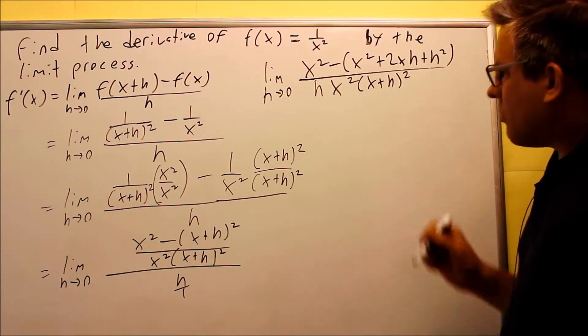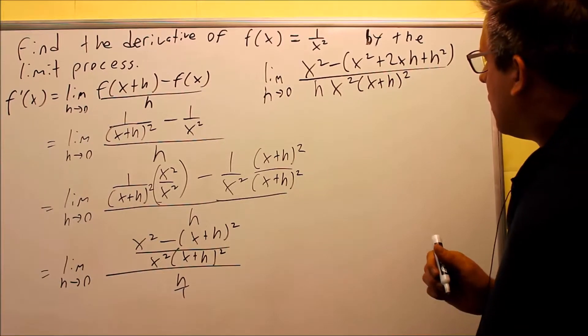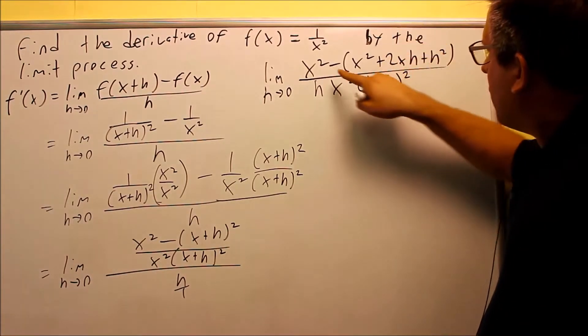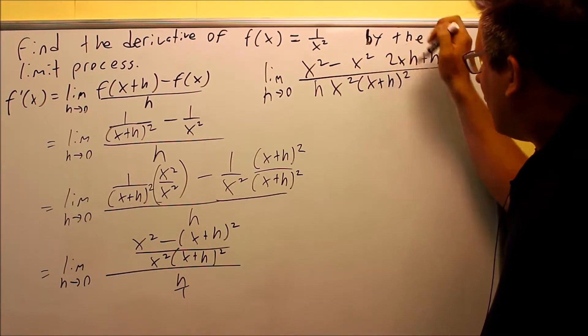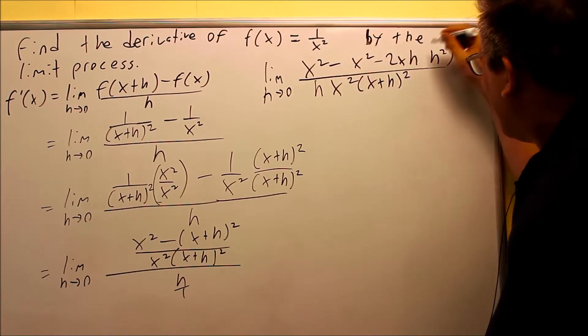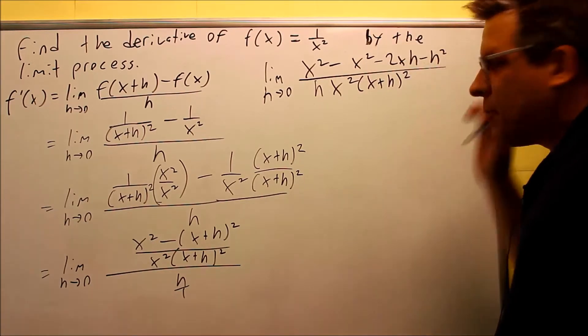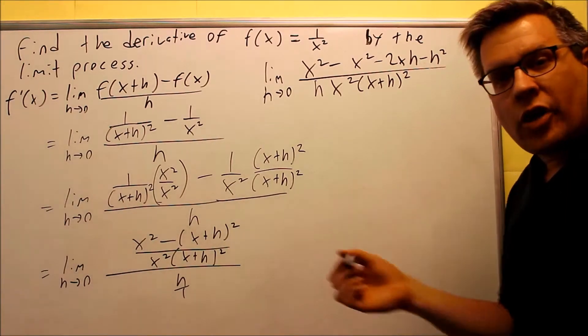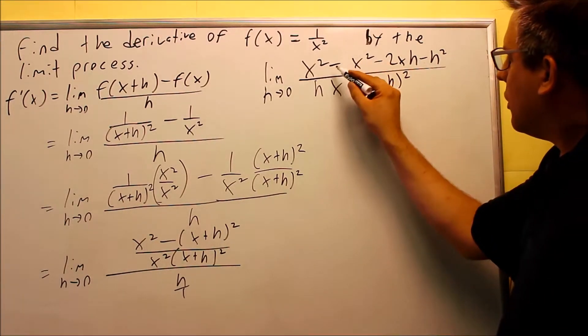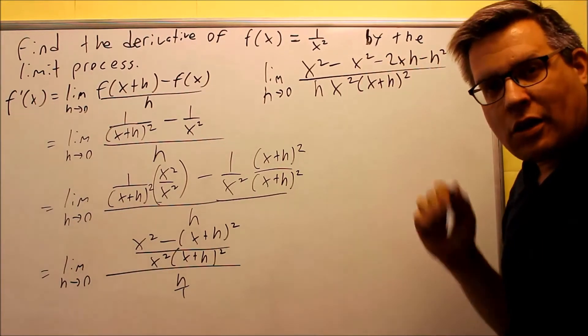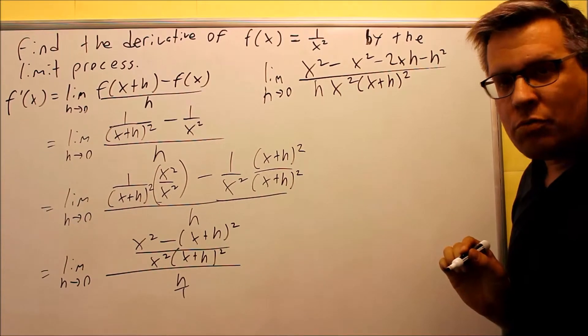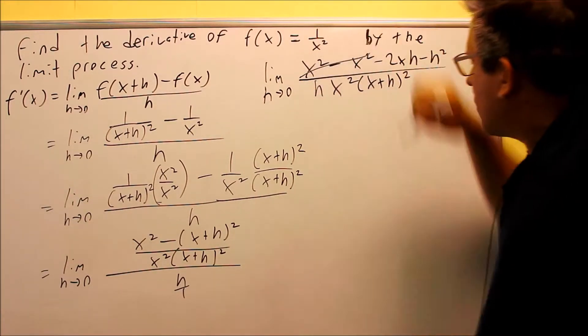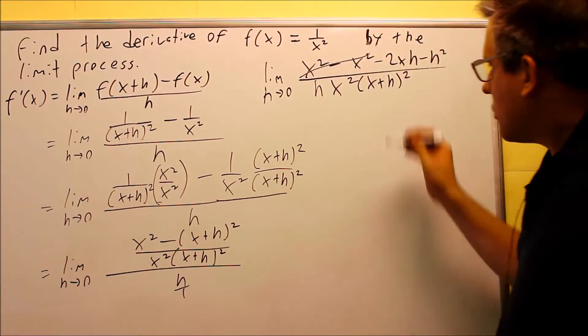And then I need to do some simplifying. So what I'm going to do here is I'm going to distribute the minus sign through. So I'm going to do, that's a minus. This is going to be a minus, and this is a minus. Don't forget to do that part. That part is elementary, but it's very important, because if you don't distribute the minus signs, you're not going to get the correct answer. So you've got to make sure that you're subtracting everything through. That's going to allow you to cancel out these x's.